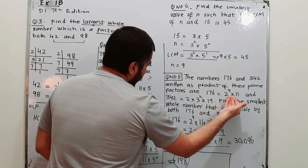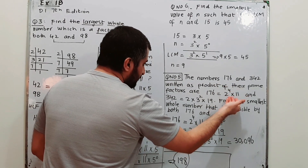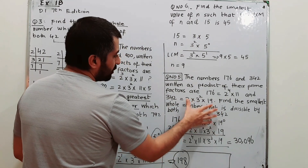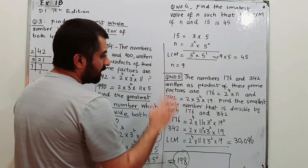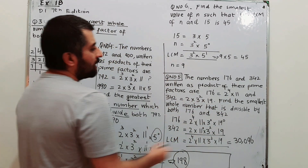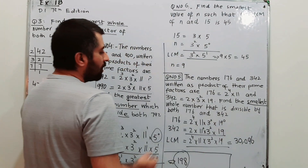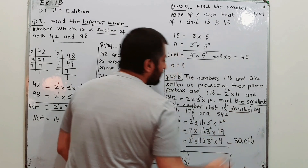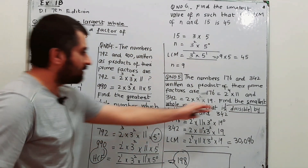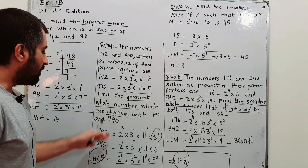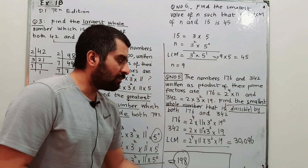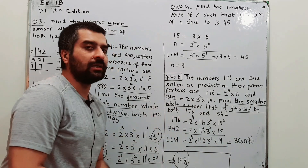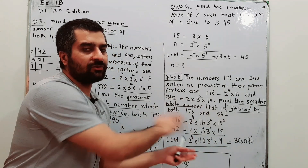176 and 342 are both expressed as products of their prime factors in index notation. We need to find the smallest whole number that is divisible by both. The word 'divisible' is the key — when the word is 'divisible,' we are going to talk about LCM.